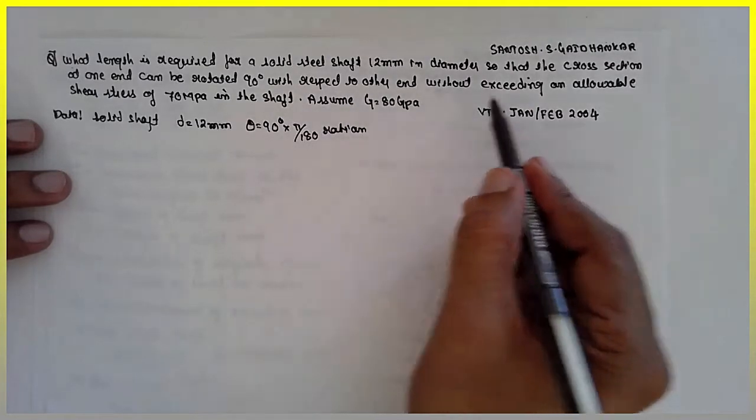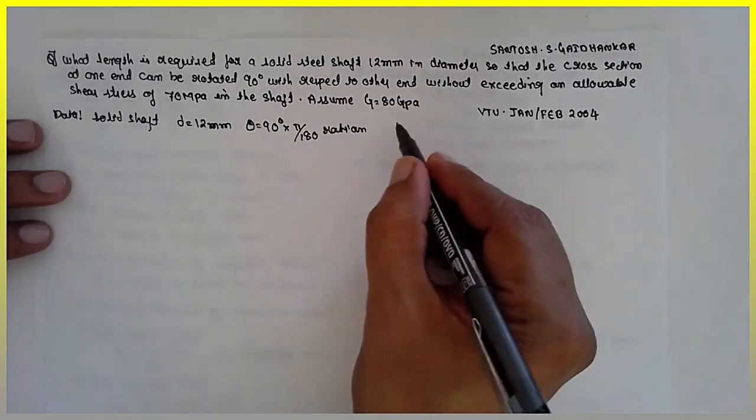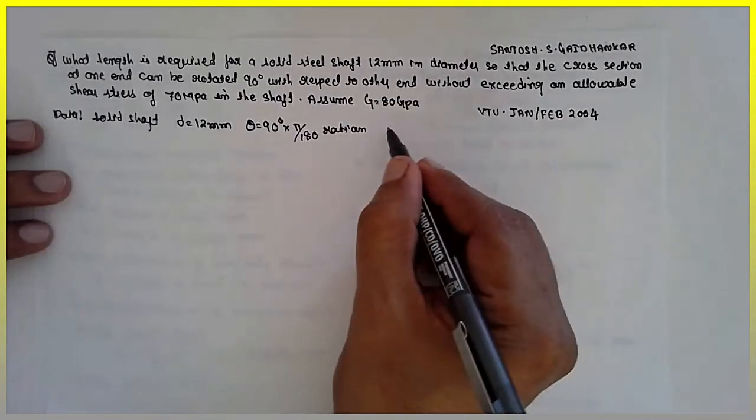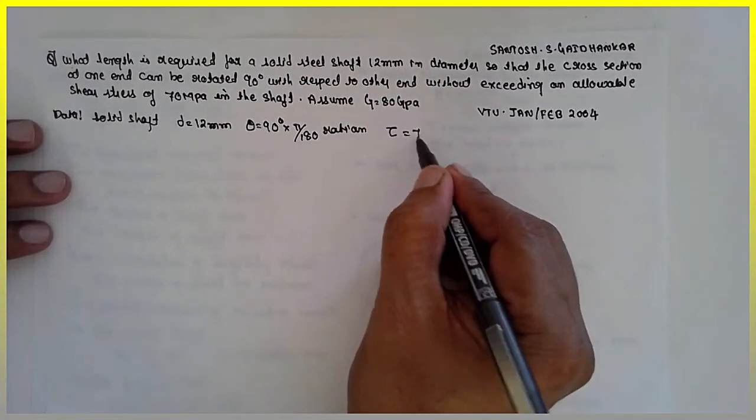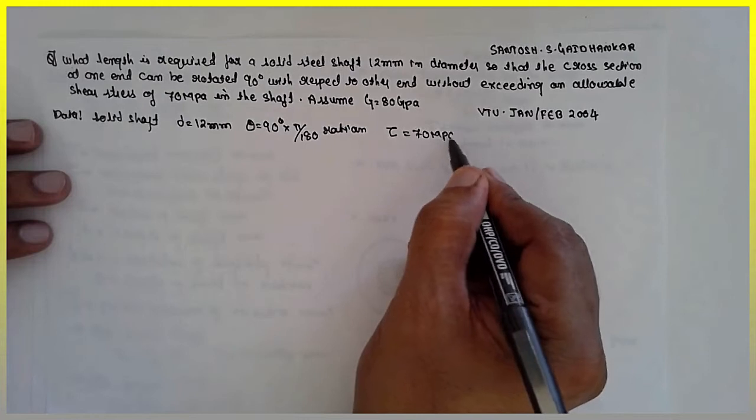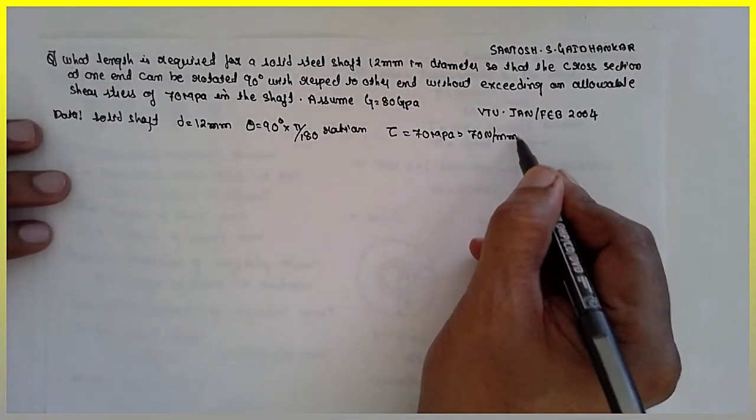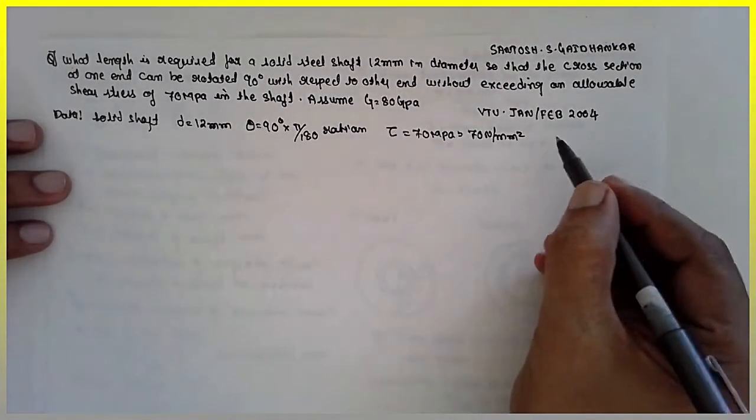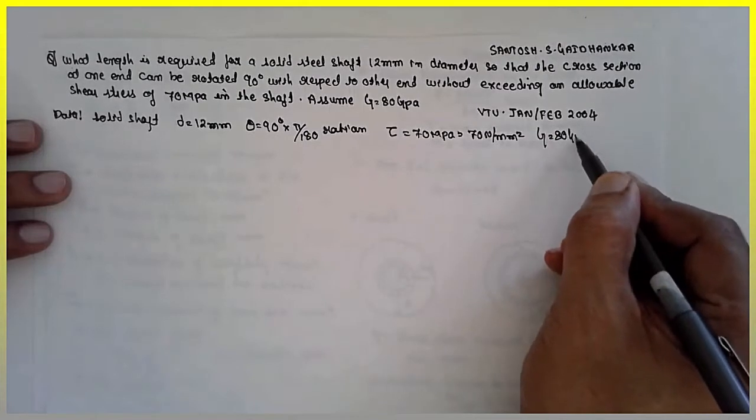With respect to other end, without exceeding an allowable shear stress of 70 mega Pascal. Allowable shear stress, that is tau or tau max, which is 70 mega Pascal. That means 70 Newton per mm square, 1 mega Pascal is 1 Newton per mm square.